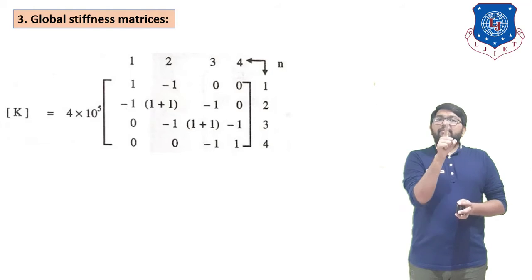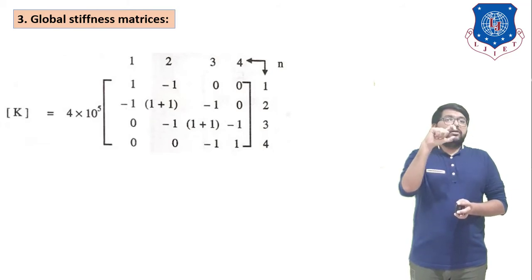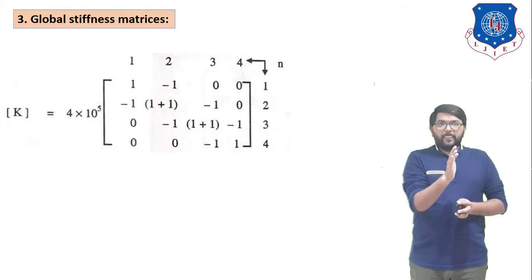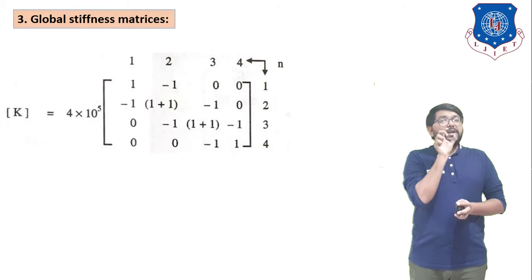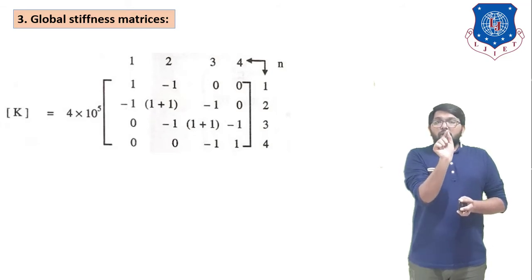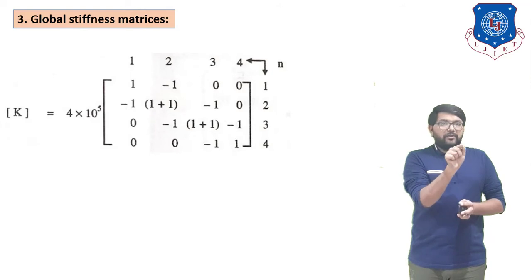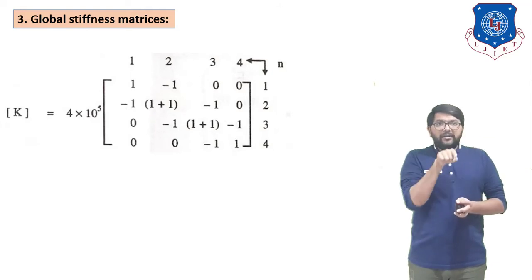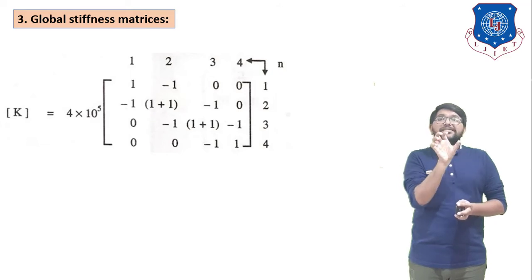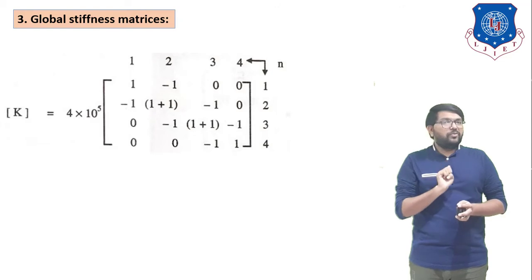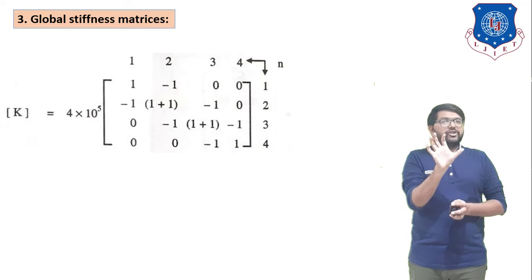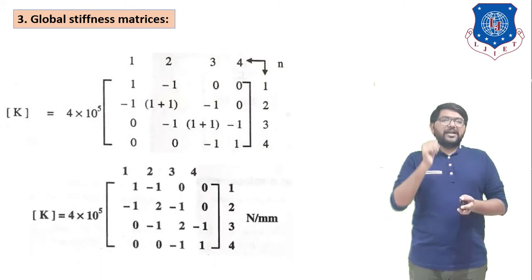Assembling the global stiffness matrix: element 1 contributes to rows and columns 1–2, element 2 overlaps at the corner point with addition where matrices overlap, and element 3 contributes to rows and columns 3–4. Zeros fill remaining positions. The resulting global stiffness matrix K = 4 × 10⁵ × [1,-1,0,0; -1,2,-1,0; 0,-1,2,-1; 0,0,-1,1].